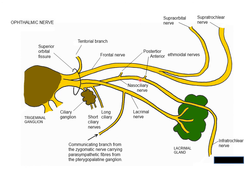One branch not yet discussed is the meningeal branch of the ophthalmic nerve, more precisely known as the recurrent tentorial branch. It is more commonly given off from the ophthalmic division before it exits the skull through the superior orbital fissure, and it provides innervation to the dura mater in the anterior cranial fossa, mainly the falx cerebri and the tentorium cerebri.